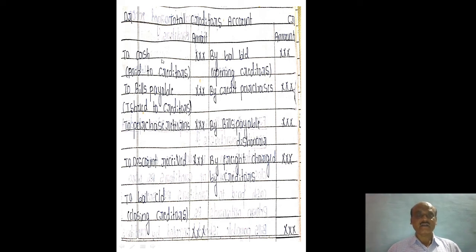The opening balance of creditors is brought down. By credit purchase — this is the balancing figure. Then by bills payable issued to creditors, by freight charged by creditors. Then to cash paid to creditors, to bills payable issued to creditors, to purchase returns, to discount received from creditors. Balance carried down — closing balance of creditors. This is the balancing of the missing items.